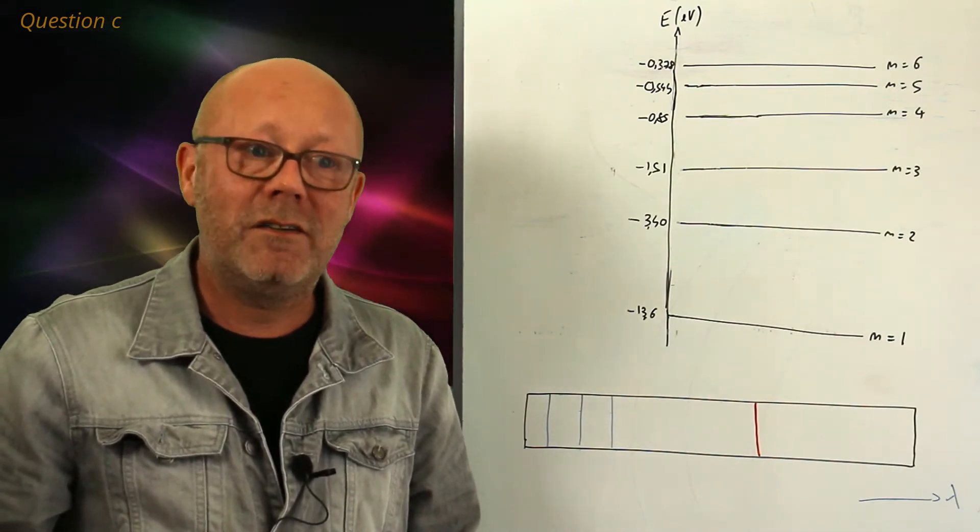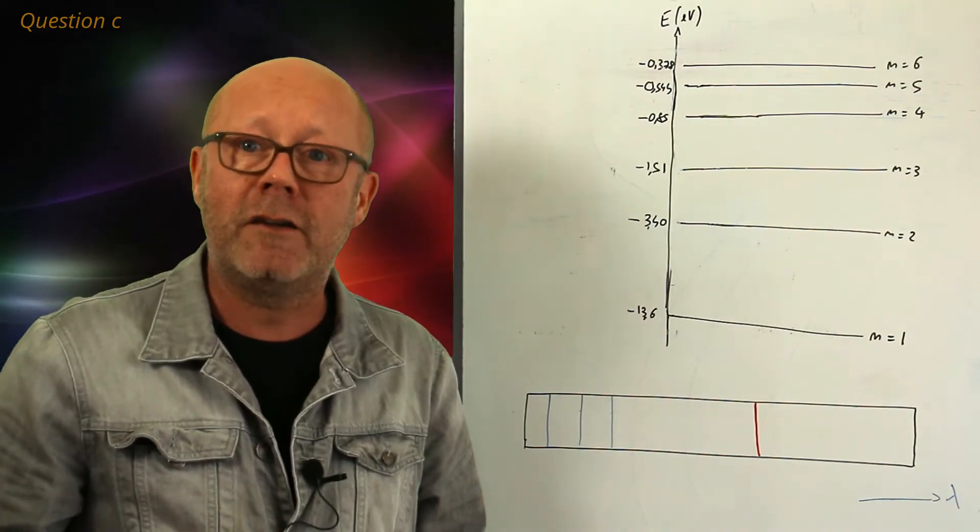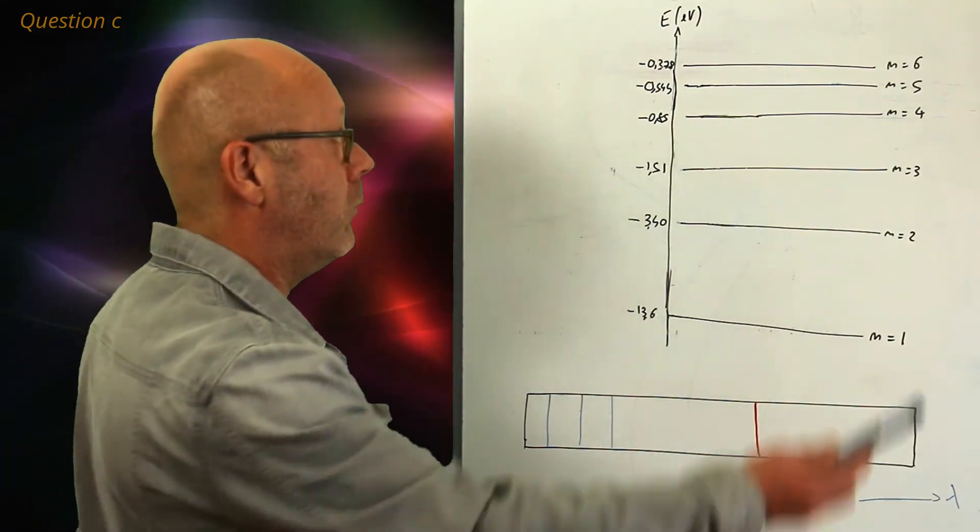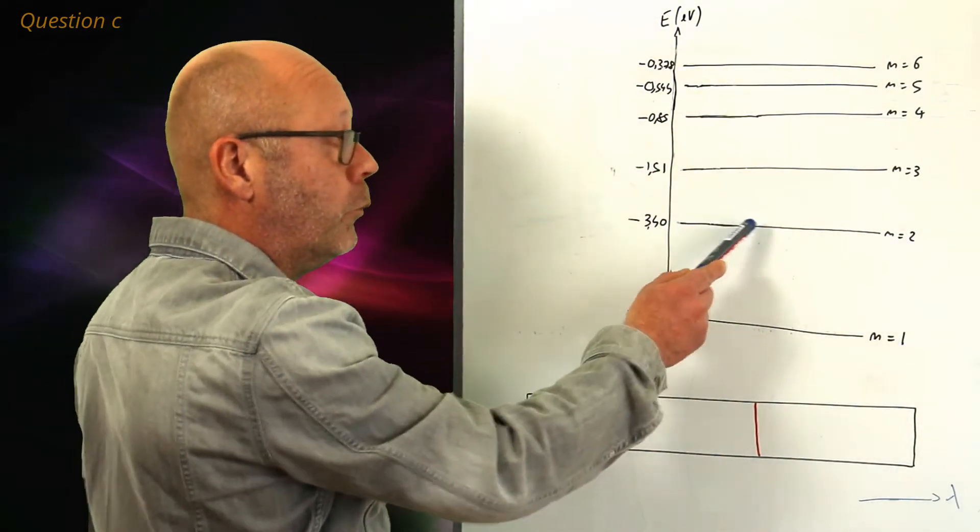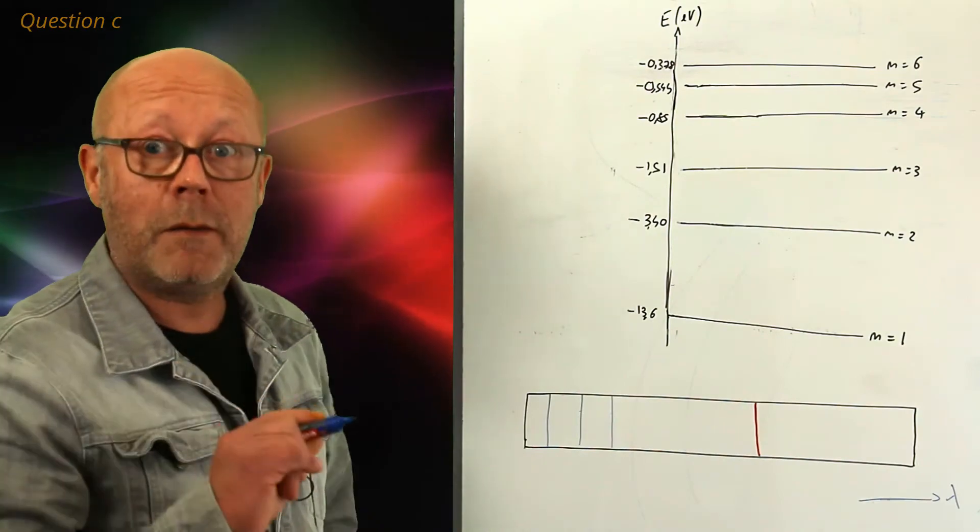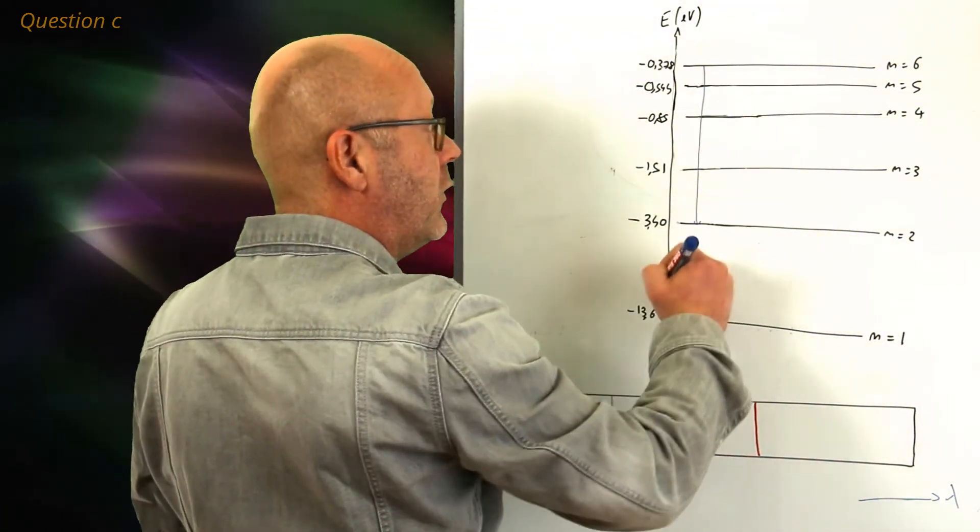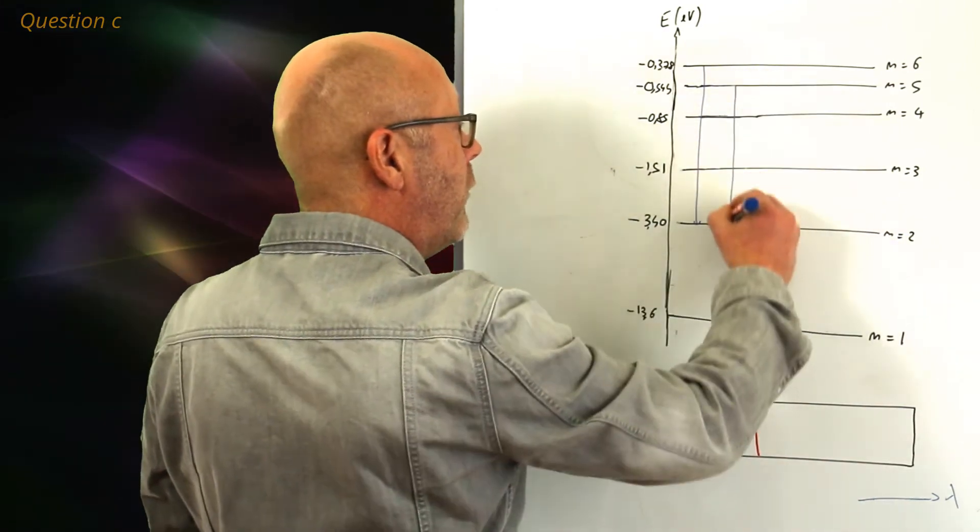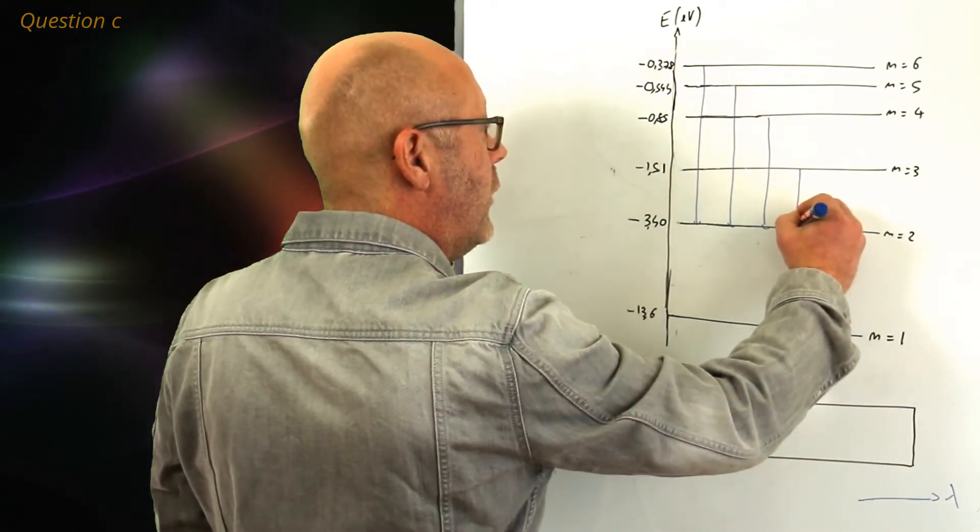The Balmer series is the name given to a family of spectral emission lines from the hydrogen atom, where the atom transits from a high level to level 2. So, I can draw the Balmer series for our diagram. That would be transition from 6 to 2, from 5 to 2, from 4 to 2, and then from 3 to 2.